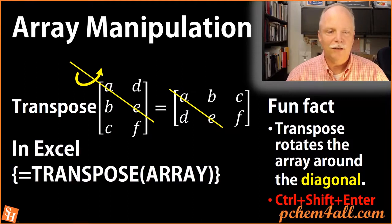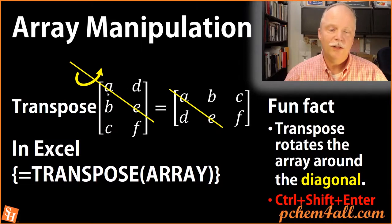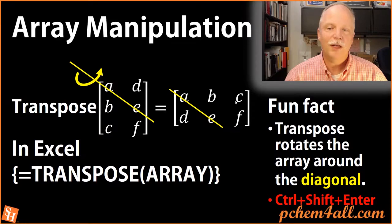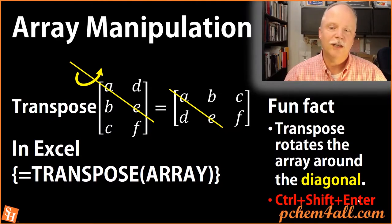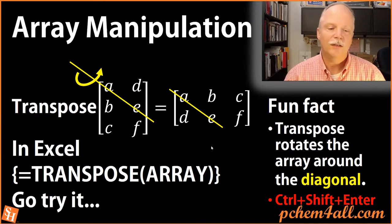To transpose in Excel, type the formula TRANSPOSE and put the array in parentheses. You need to know how many cells the result will take up. For example, a three-by-two matrix turns into a two-by-three, so select all the result cells first. Then in the formula bar type equals TRANSPOSE, open parentheses, select the cells to transpose, close parentheses, and hit Ctrl+Shift+Enter. This tells Excel to copy that formula into all of the result cells.